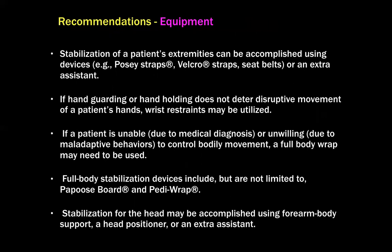Recommendations regarding equipment state that stabilization of a patient's extremities can be accomplished using Posey straps, Velcro straps, seat belts, or an extra assistant. If hand guarding or hand holding does not deter disruptive movement, wrist restraints may be utilized. If a patient is unable or unwilling to control bodily movement, a full body wrap may be needed. Full body stabilization devices include, but are not limited to, the Papoose board and Pedi Wrap. Stabilization for the head may be accomplished using forearm body support, a head positioner, or an extra assistant.